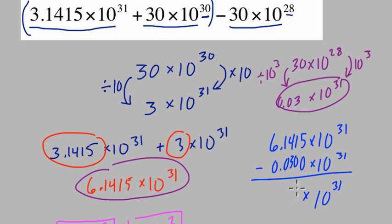5 minus 0, 1 minus 0, 5, 1. 4 minus 3 is 1, 1 minus 0 is 1, and 6 minus 0 is 6. There's our answer. 6.1115 times 10 to the 31st.